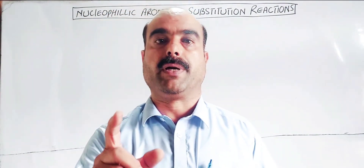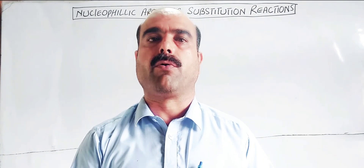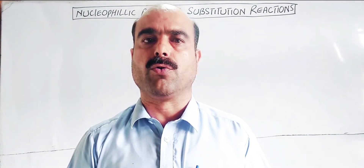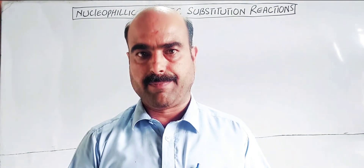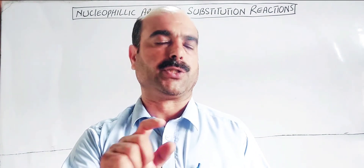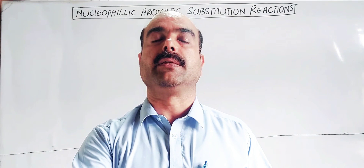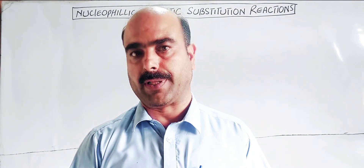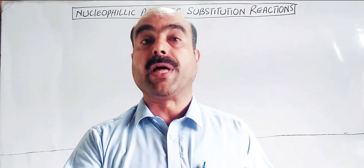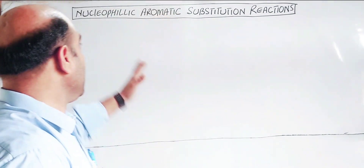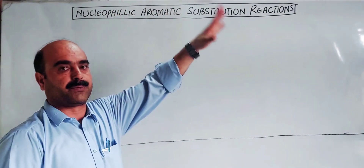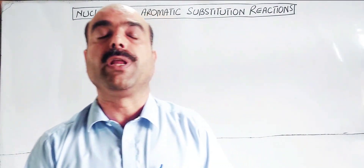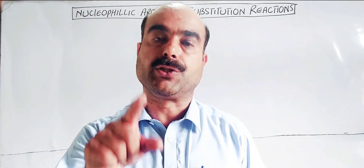Students, this topic is in demand. When I started carbonyl compounds in the second year, students desired I also cover electrophilic aromatic substitution reactions. In electrophilic aromatic substitution, the benzene ring is a rich source of electrons and you have an electrophile that attacks. That is the electrophilic aromatic substitution reaction. The problem now is nucleophilic attack — the nucleophile attacks a positive center.